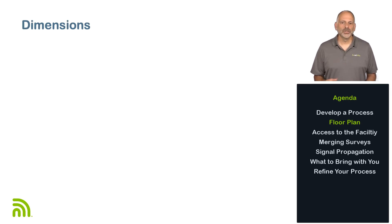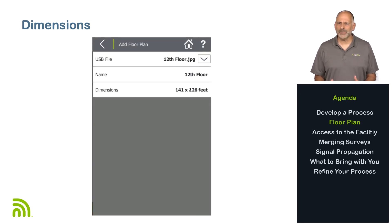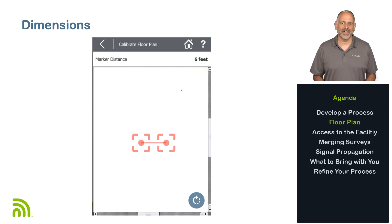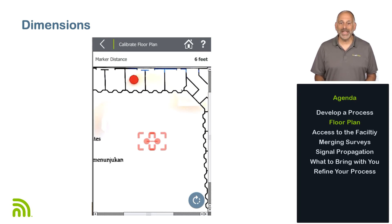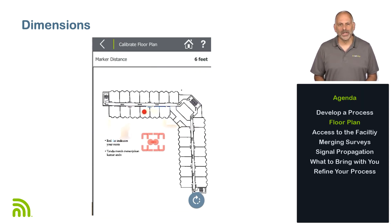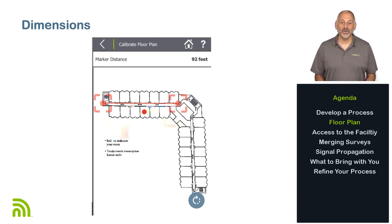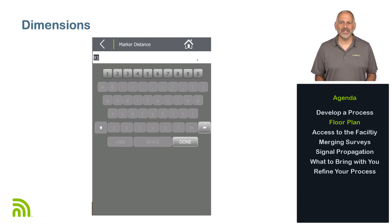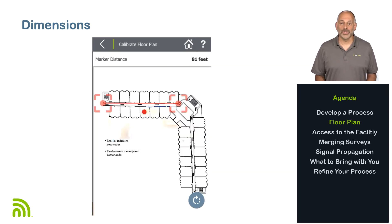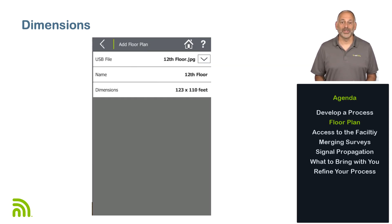In addition to the floor plan, you'll need the dimensions of a portion of the floor plan for calibrating the survey — typically between two points that are easy to identify and measure. This will be entered when you import the floor plan into AirMapper. Your survey will only be as accurate as the dimensions you enter, so it's best to make sure they're right. For indoor surveys, I use a laser measuring device to measure distances. These are inexpensive and provide an easy and accurate way to measure distances. For outdoor surveys, you can use the measurement tools available in applications such as Google Maps.